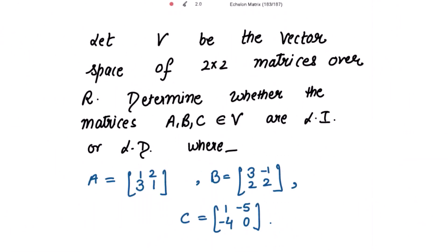Let V be the vector space of 2 by 2 matrices over R, and we need to determine whether the matrices A, B, C that belong to V are linearly independent or not. So first we need to get the linear combination αA + βB + γC = 0, and then check whether alpha, beta, and gamma are all equal to 0 or not.